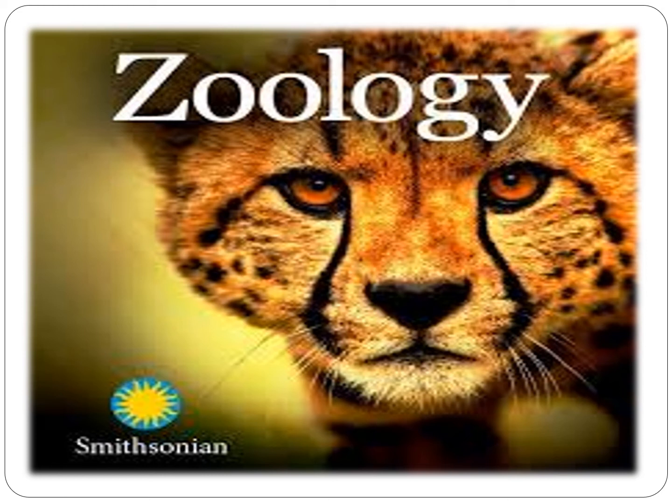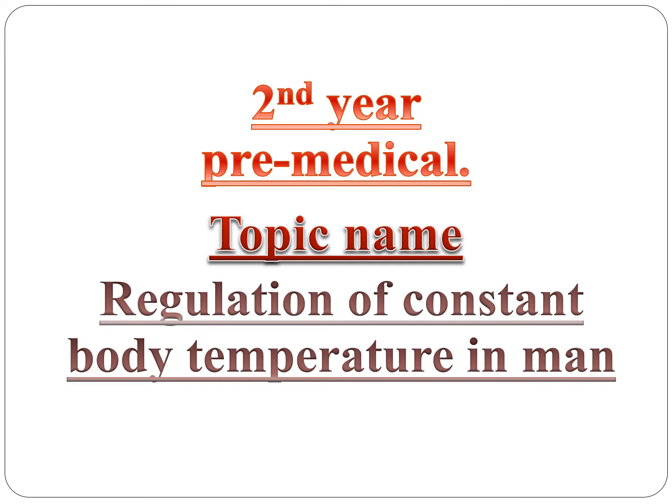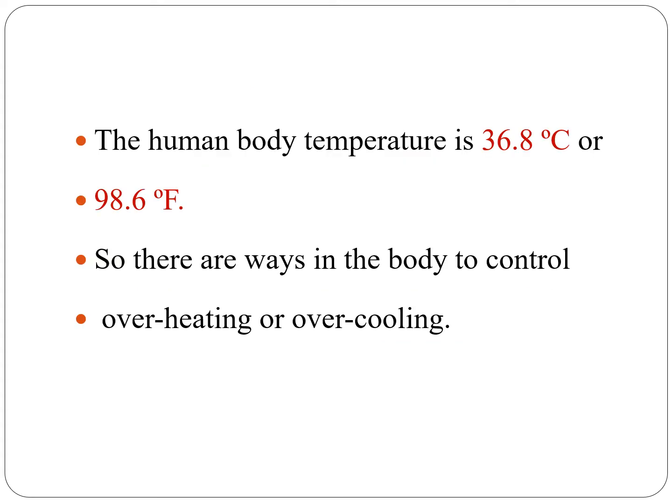Bismillahirrahmanirrahim. Subjectsology, 2nd AFT Medical. Topic name is Regulation of Constant Body Temperature in Men. The human body temperature is 36.8 degrees centigrade or 98.6 degrees Fahrenheit. There are ways in the body to control overheating or over-cooling.